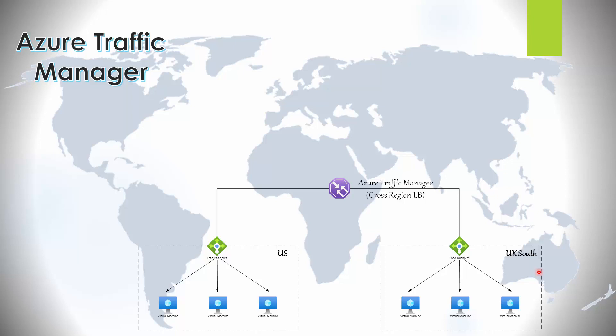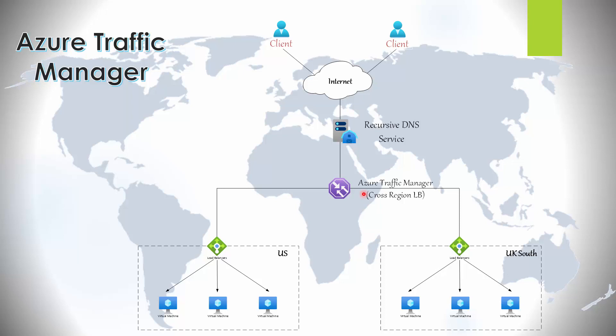It's a DNS-based load balancer, which means it load balances traffic using DNS. DNS traffic from the clients goes to the recursive DNS service, and eventually the Traffic Manager decides which region to distribute the traffic to. The clients find out where to go from the Traffic Manager DNS service — they do a DNS query and get a DNS response via their local DNS service.